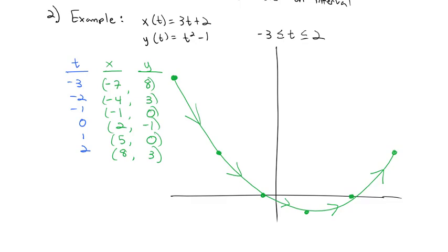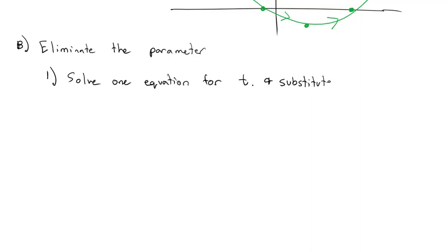Now, sometimes it might be useful to convert our parametric equation and eliminate the parameter so that we can see the relationship between x and y and be a little more straightforward. Really, the way we can eliminate the parameter is we can solve one equation for the parameter t and substitute into the other function. So let's take a look at some examples.